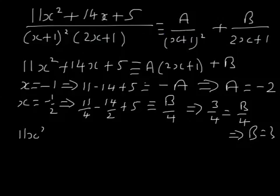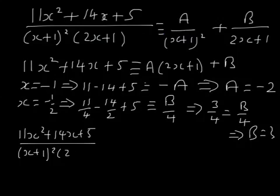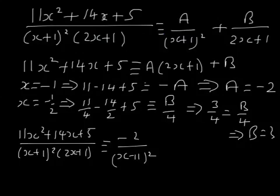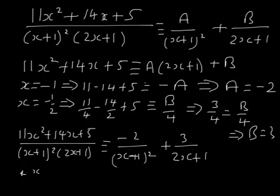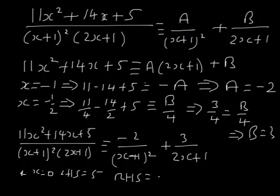So we get 11x squared plus 14x plus 5 over (x plus 1) squared (2x plus 1) equals A over (x plus 1) squared plus 3 over (2x plus 1). But this has to be true for every single value of x. Let's check by taking x equals 0: the left-hand side is 5 over 1, which is 5. The right-hand side is minus 2 plus 3, which is 1. So 5 equals 1 — it just doesn't work.